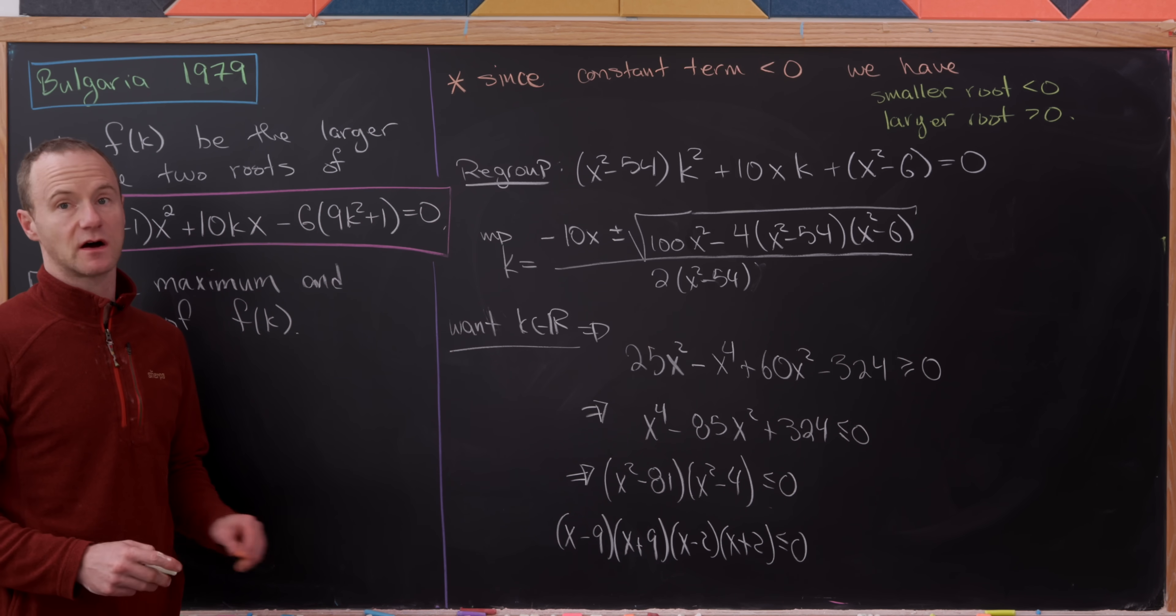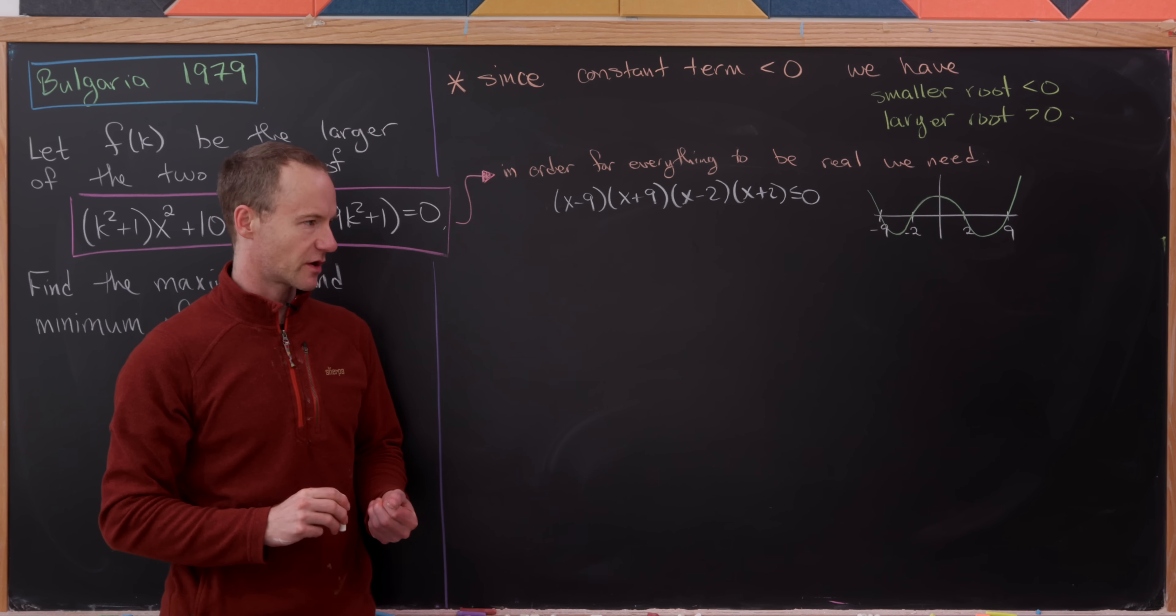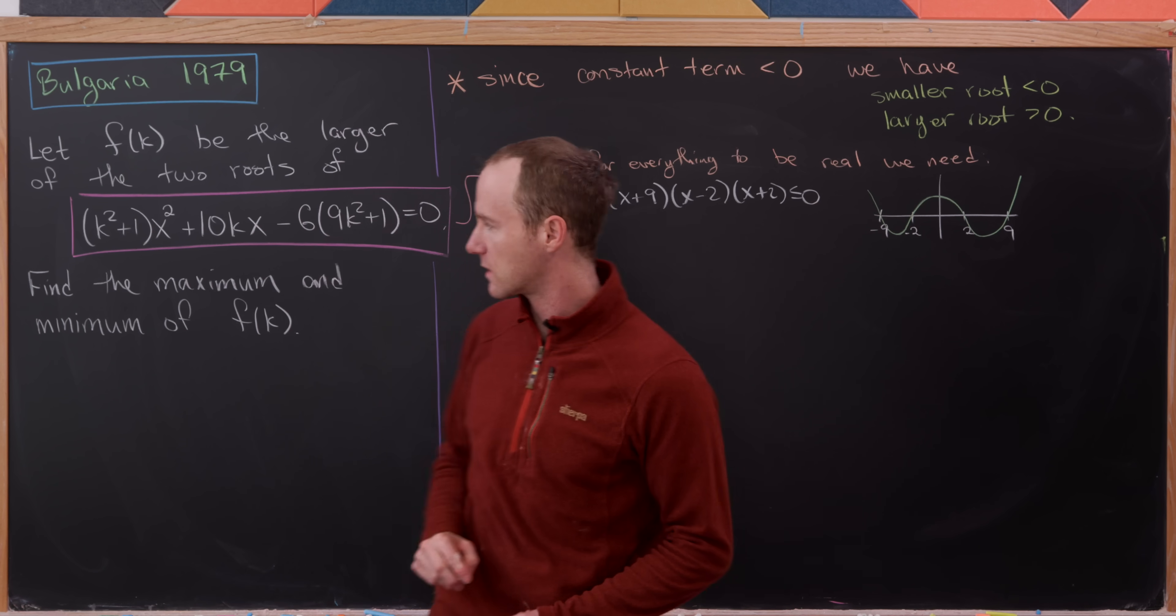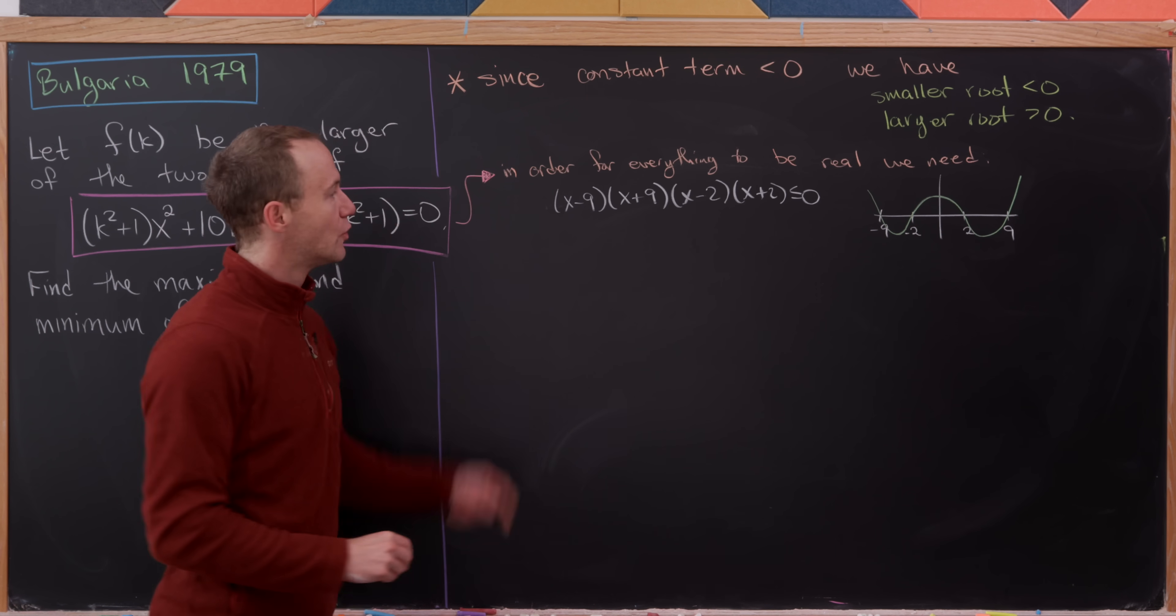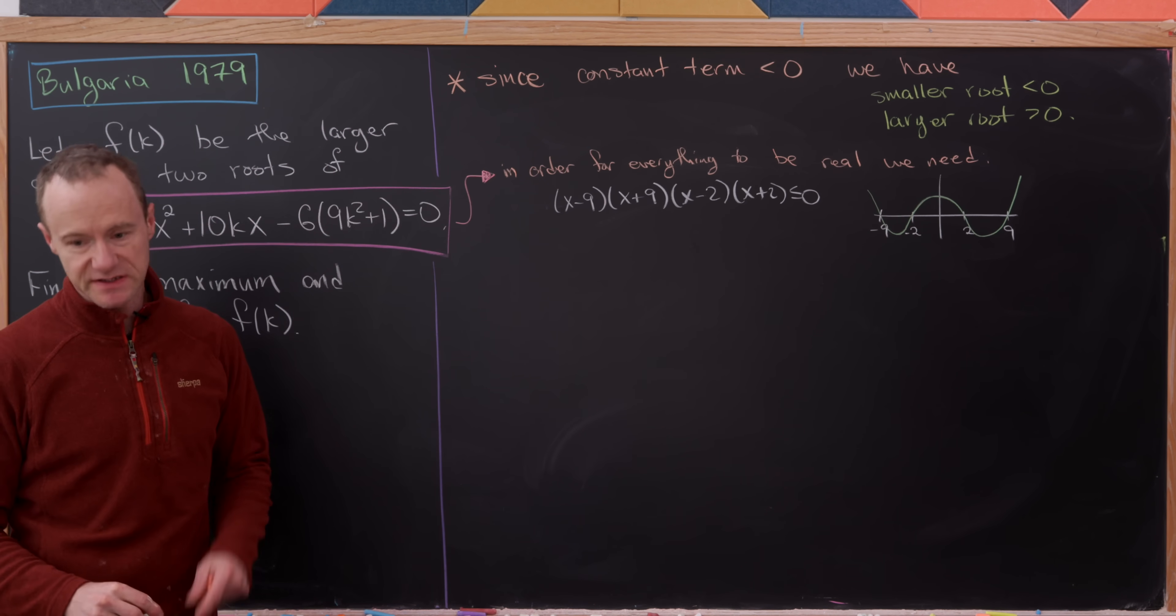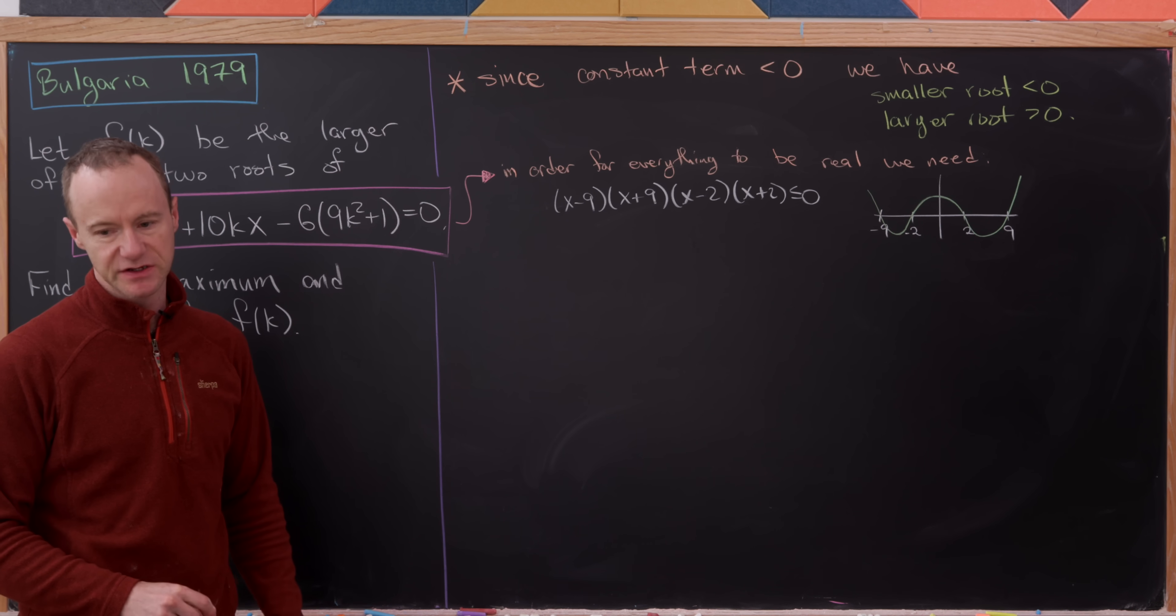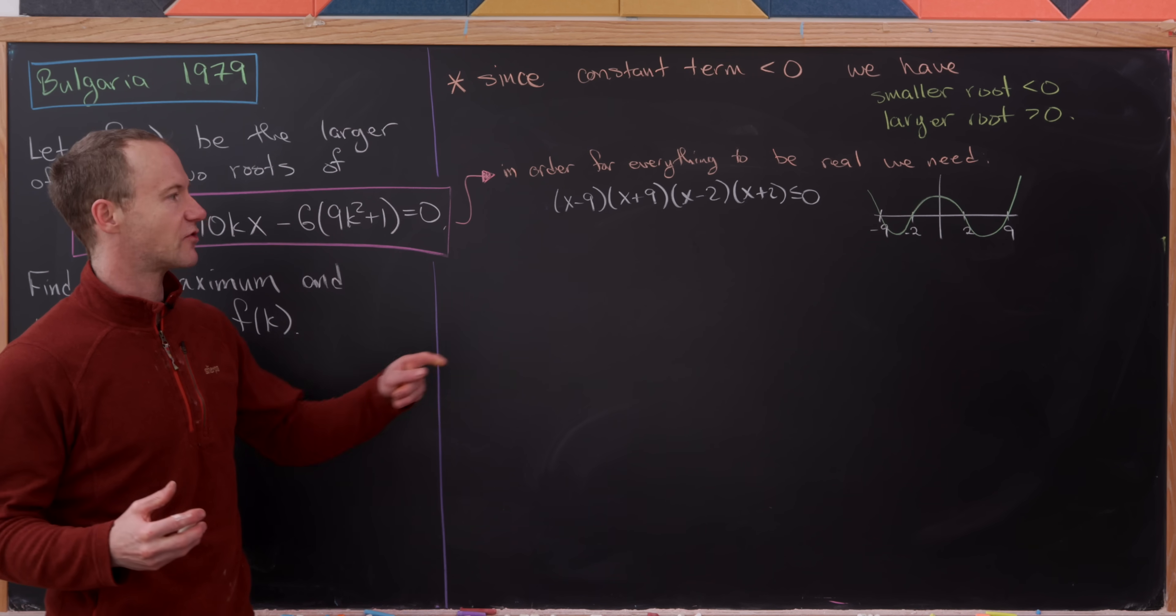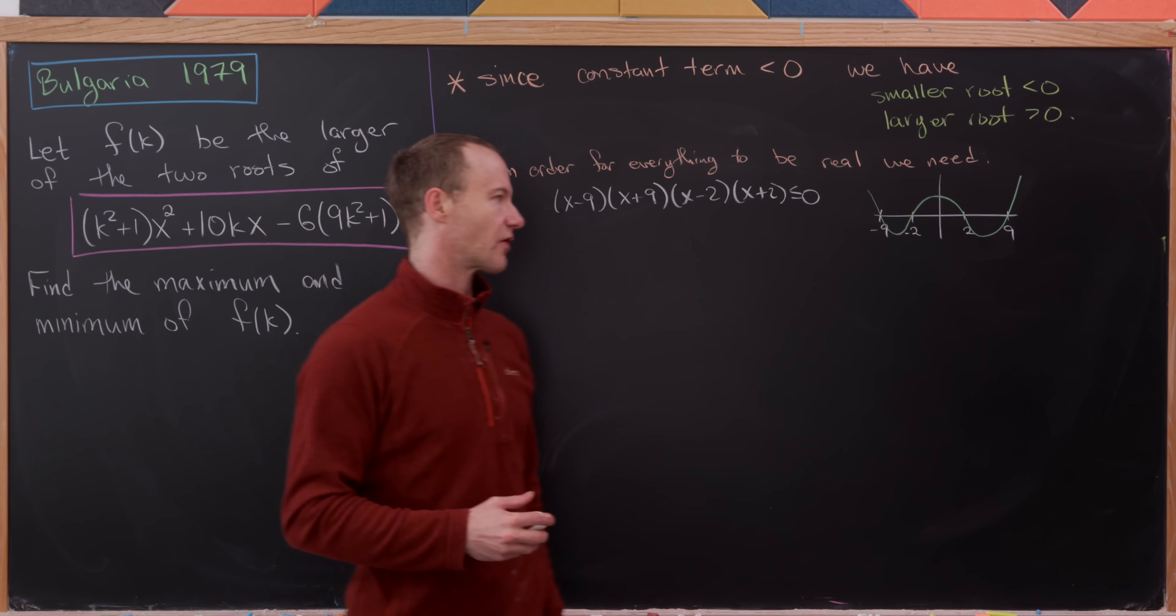Let's finish this off. Using the argument we started earlier, in order for everything to be a real number, we need this product (x - 9)(x + 9)(x - 2)(x + 2) to be ≤ 0. That's a quartic polynomial, and it's pretty easy to graph.